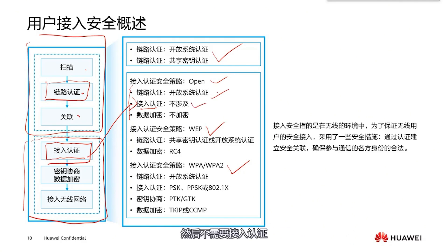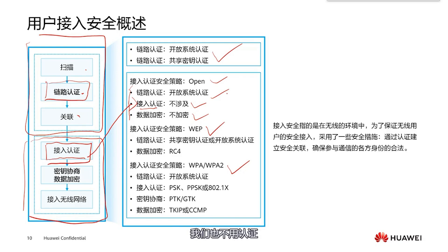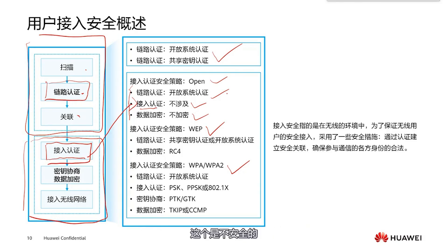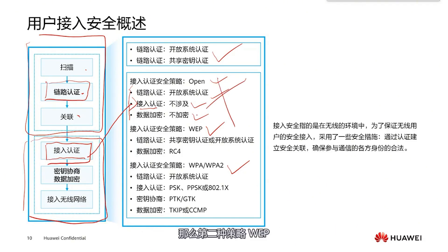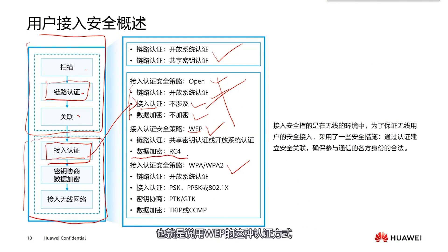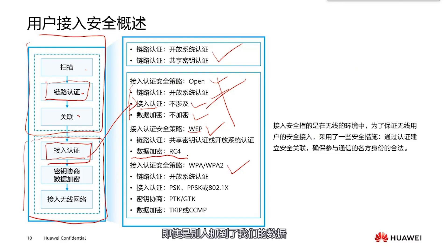The Open security strategy has a very low security level. Data is not encrypted and no authentication is required, so anyone connecting will have their data transmitted unencrypted — it could theoretically be intercepted. This is not secure, and in home settings we rarely use this type. Moving on to the second strategy, WEP: this uses shared key link authentication followed by data encryption, so even if data is intercepted it is encrypted.